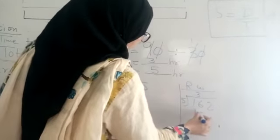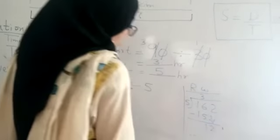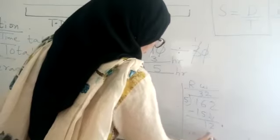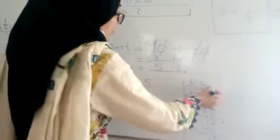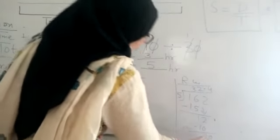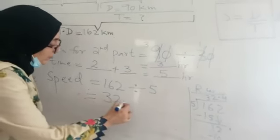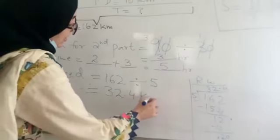5 into 3 is 15, then minus, 1 comes down, 2 comes down and it will become 12. Then 5 into 2 is 10, then subtract. You can put the decimal and 0. So it will become 5 into 4 is 20. Now see the average speed which you have found is 32.4. And what is the unit? Kilometer per hour.